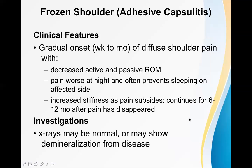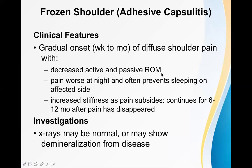The clinical features of frozen shoulder include gradual onset — it is not a sudden or acute-onset problem — and it may start over weeks to months. There is diffuse shoulder pain in the affected shoulder, usually unilateral, and there is decreased range of motion. The shoulder is a highly mobile joint with flexion, extension, adduction, abduction, internal rotation, external rotation, and circumduction — all of which are severely decreased in frozen shoulder.